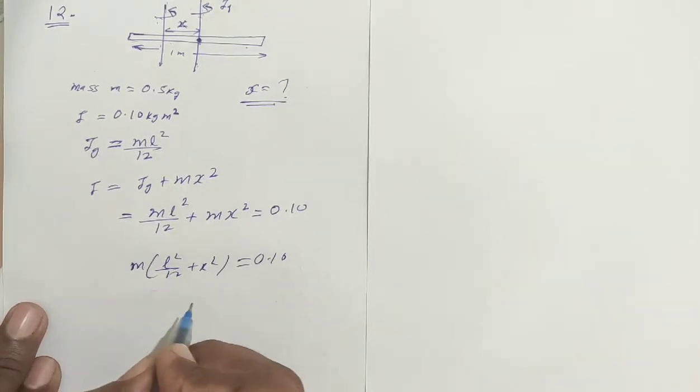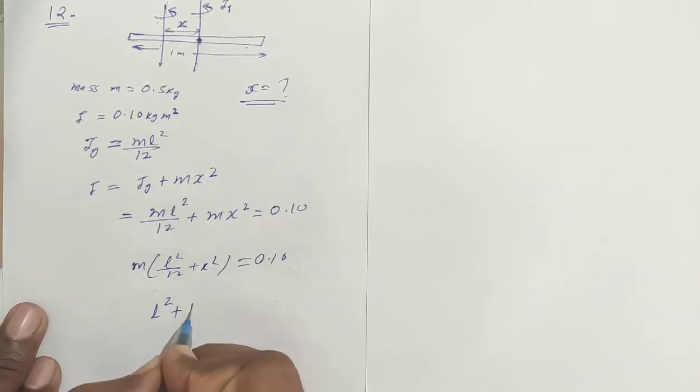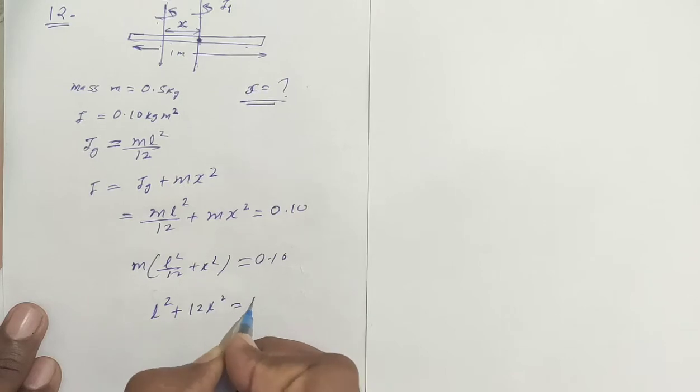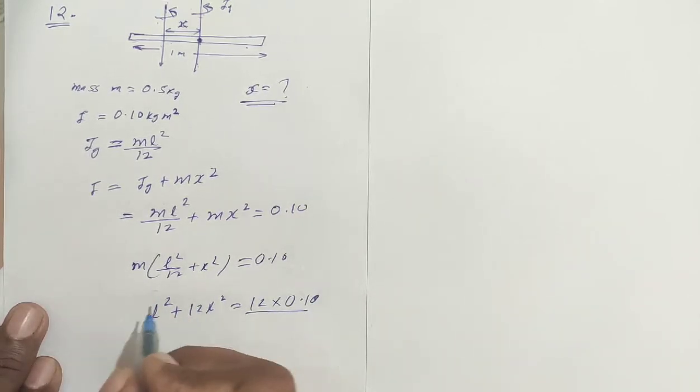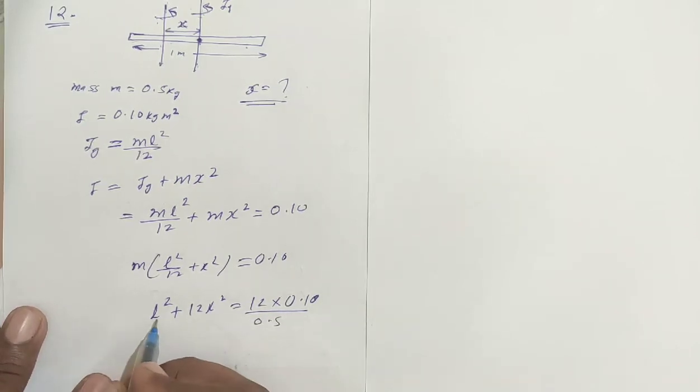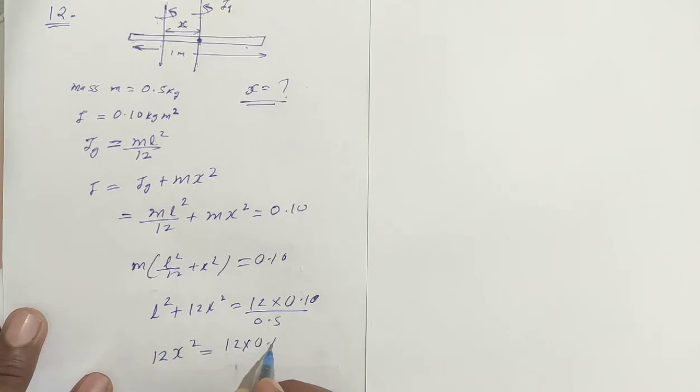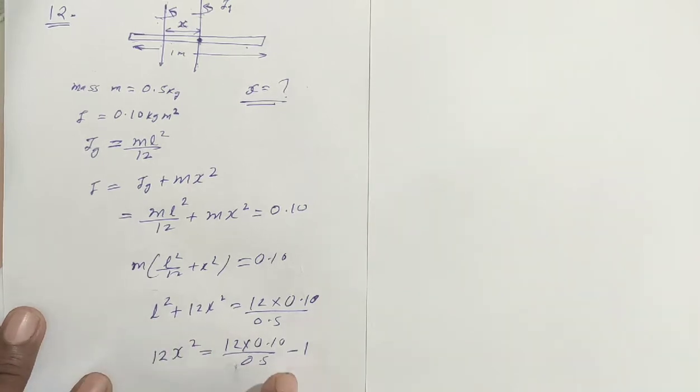So we put all the values: L square plus 12 x square equals 12 into 0.10 by mass. Mass is how much? 0.5. And L is how much? L is 1. So 1 plus 12 x square equals 12 into 0.10 by 0.5 minus 1.